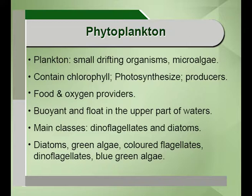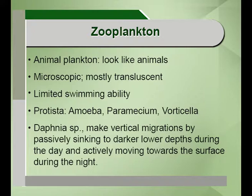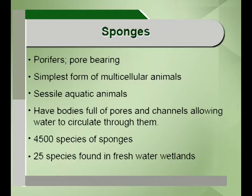Zooplankton are animal planktons that float in the waters and may or may not have a flagella. They are microscopic and translucent. Members of Protista like amoeba, paramecium and vorticella are found in lentic standing water zooplankton wetlands. The Daphnia species are well known for making vertical migrations, moving to the benthic regions away from sunlight during the daytime and moving to the surface during the night.